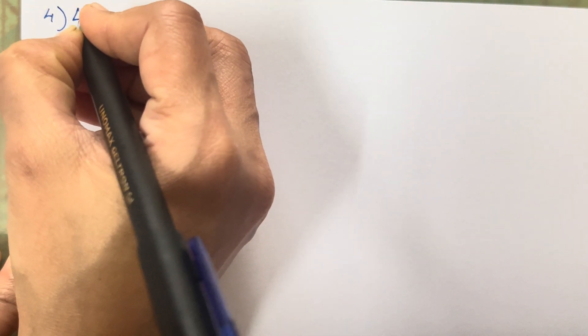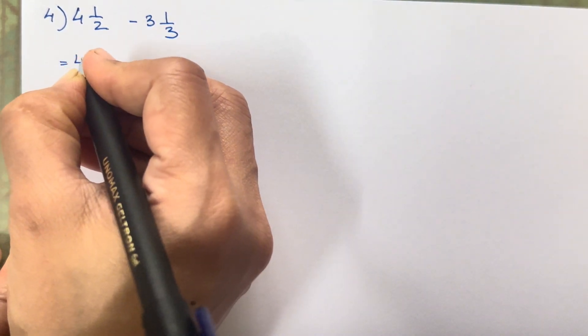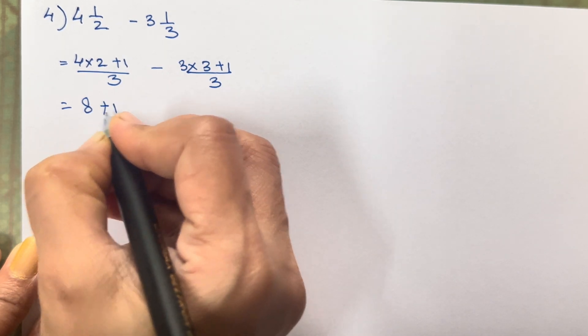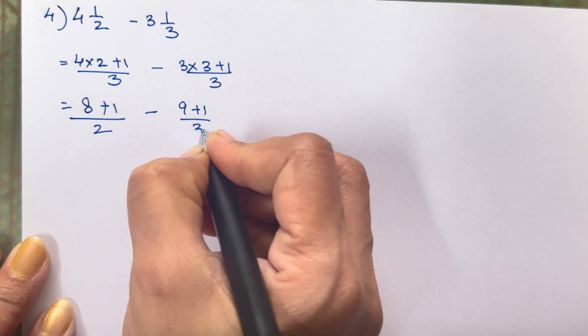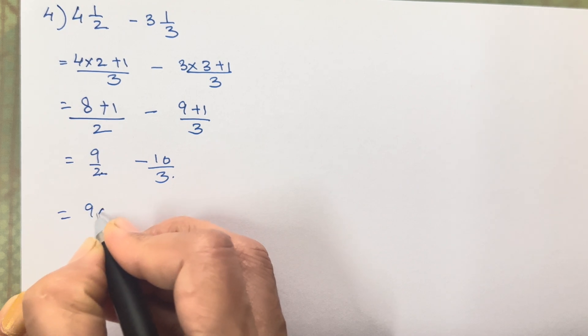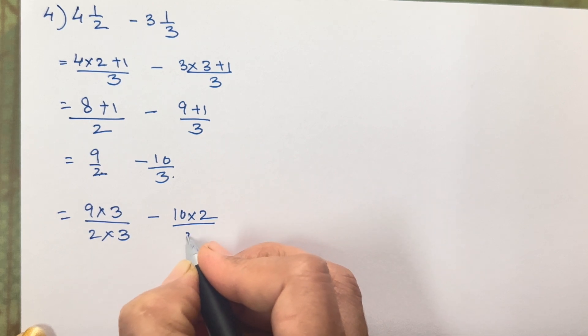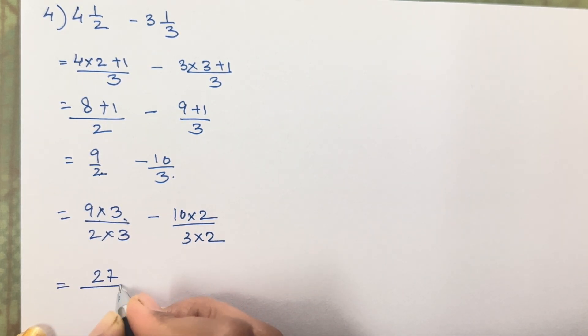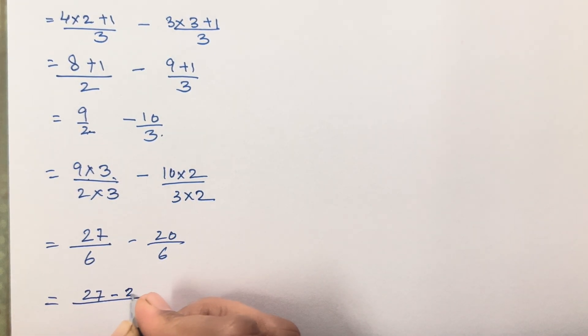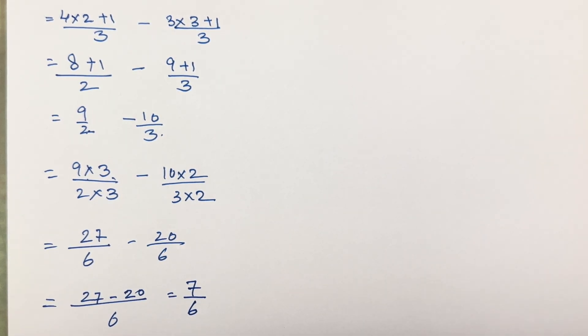Let's move on to the fourth sum. We solve the mixed fractions: 4 × 2 + 1 upon 2 = 9 upon 2, and 3 × 3 + 1 upon 3 = 10 upon 3. Now cross-multiply: 9 × 3 over 2 × 3 minus 10 × 2 over 3 × 2. That gives 27 upon 6 minus 20 upon 6. So 27 − 20 upon 6 = 7 upon 6. Both addition and subtraction follow the same steps.